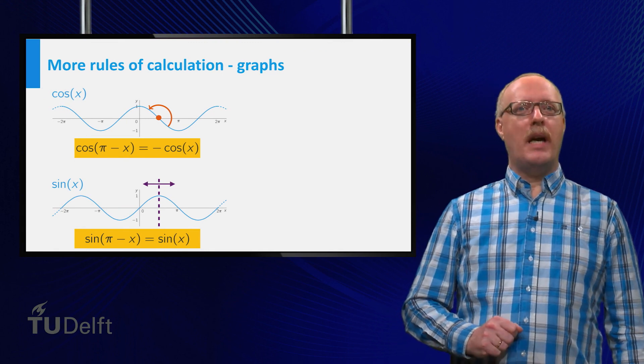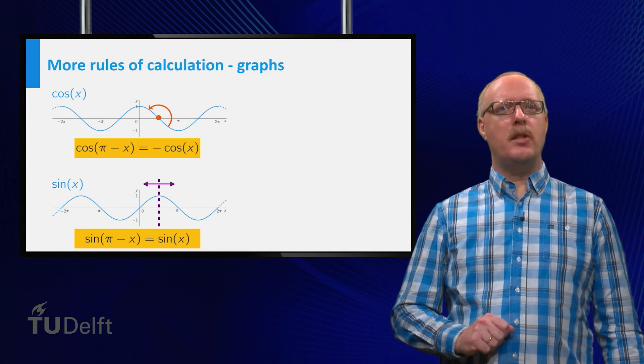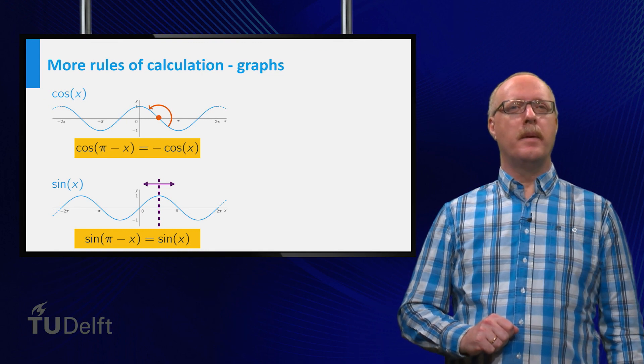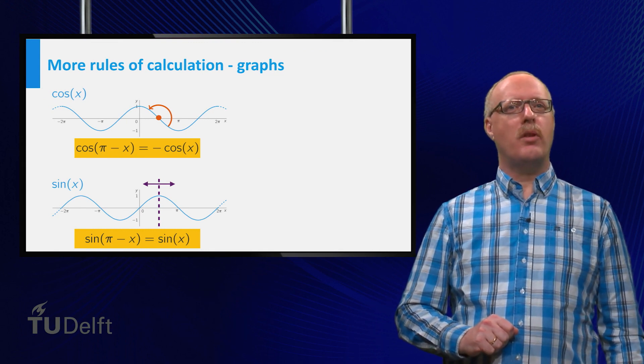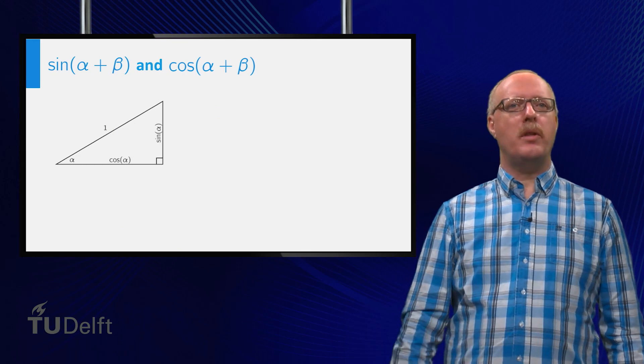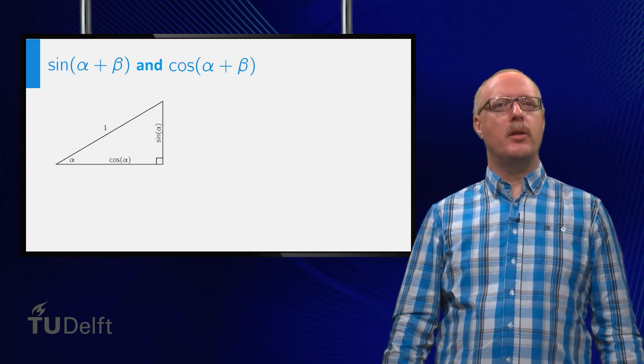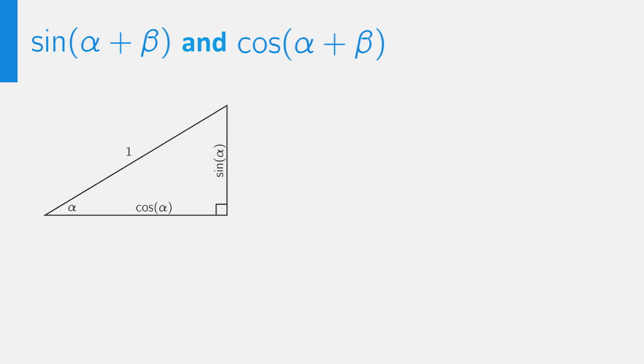Finally, we will derive the so-called addition formula for both the sine and the cosine — that is, the formula for the sum of two angles. We start with the rectangular triangle with hypotenuse equal to 1. Then the opposite side of the angle alpha equals the sine of alpha, while the adjacent side equals the cosine of alpha. Now we add an angle beta and create two extra rectangular triangles. Consider the lower one, with hypotenuse equal to the cosine of alpha instead of 1.